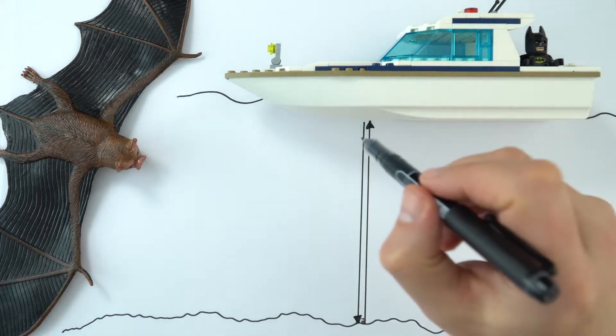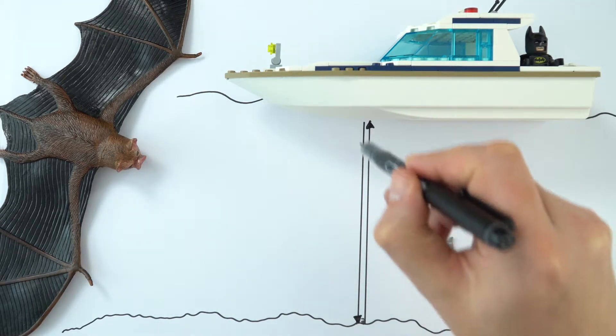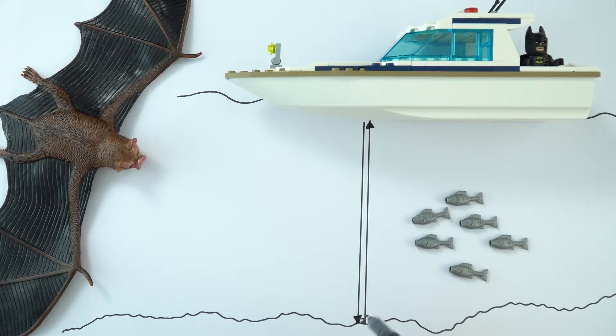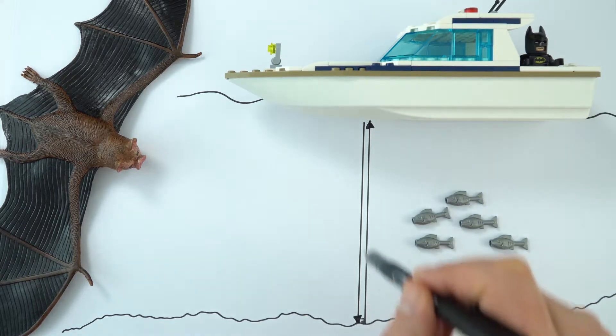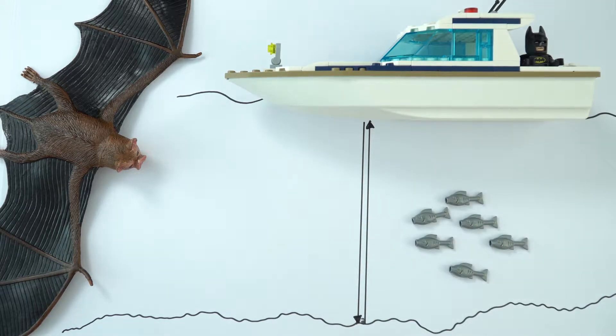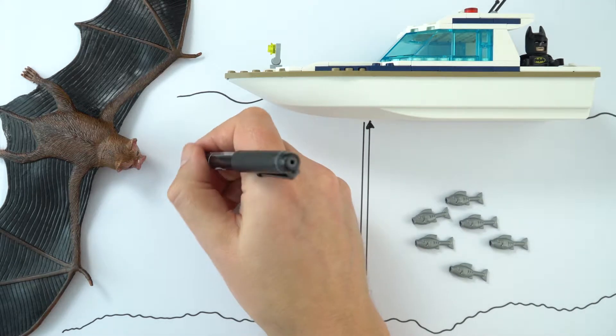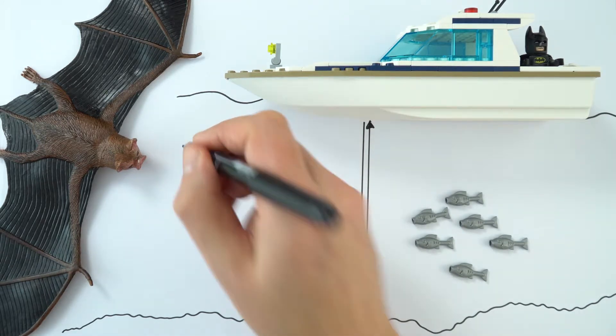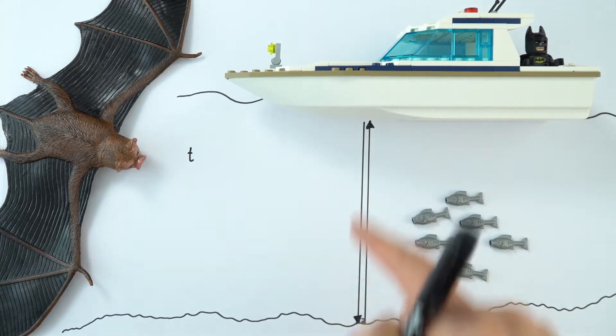So we'll imagine there's a small unit down here, it sends out a signal, some of that signal bounces off the bottom of the sea and then it's reflected back to the boat. Now what we might know is that we can actually record the time it takes for the signal to go from there to there and back again.